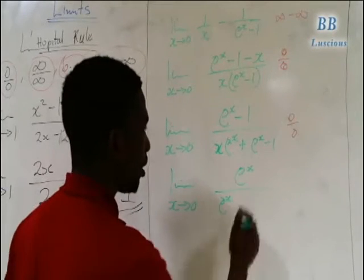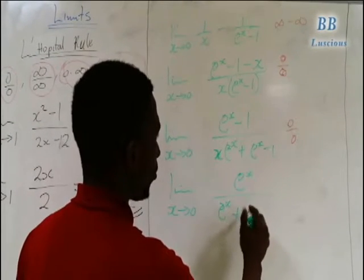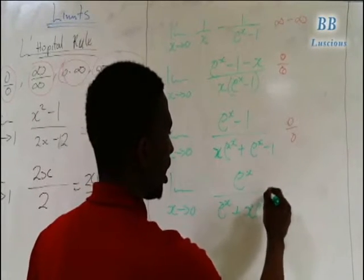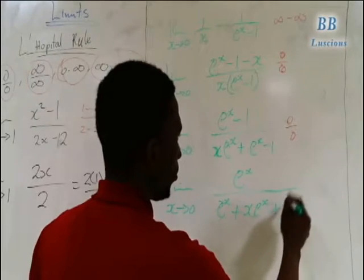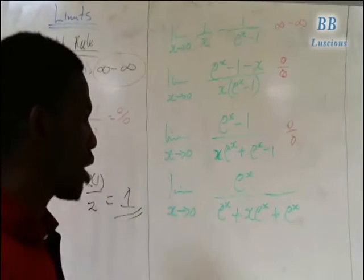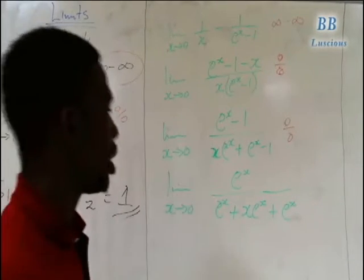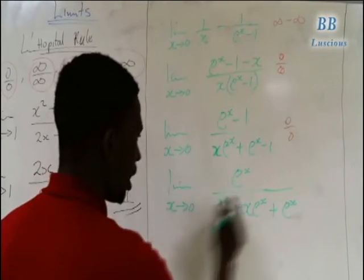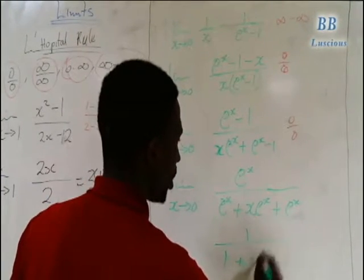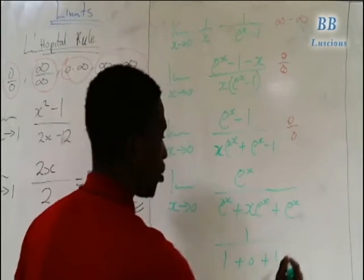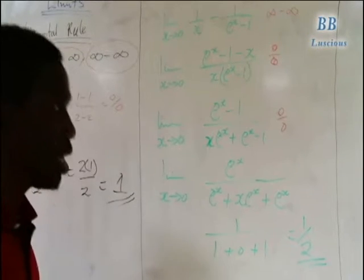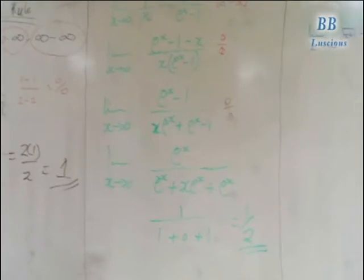Taking the second derivative, the numerator gives e^x, and the denominator gives x·e^x plus e^x plus e^x, which simplifies to x·e^x plus 2e^x. When we substitute 0, e^0 equals 1 in the numerator, and the denominator gives 0 plus 1 plus 1 equals 2. So the final answer is 1 over 2.